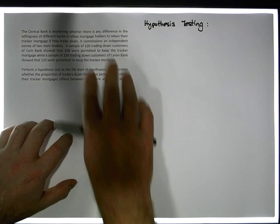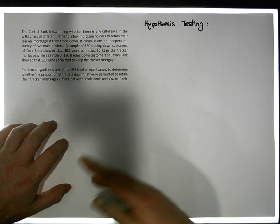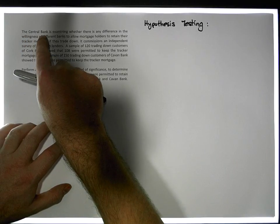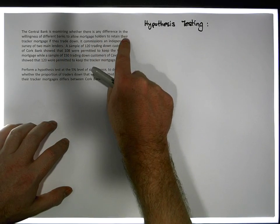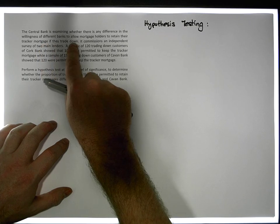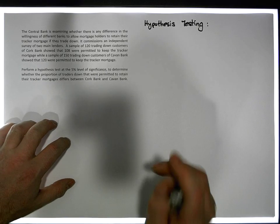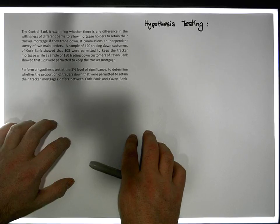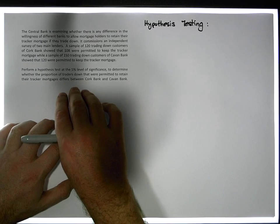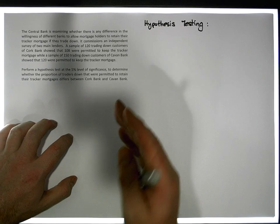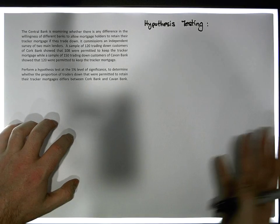In this particular example, let me run through this scenario. You can change this for any country, just put it into context with where you live. The Central Bank is examining whether there is any difference in the willingness of different banks to allow mortgage holders to retain their tracker mortgage if they trade down. The Central Bank wants to figure out whether there's differences in the behavior or willingness of different banks across different regions to allow customers to hold on to these tracker mortgages when the customer wants to trade down.